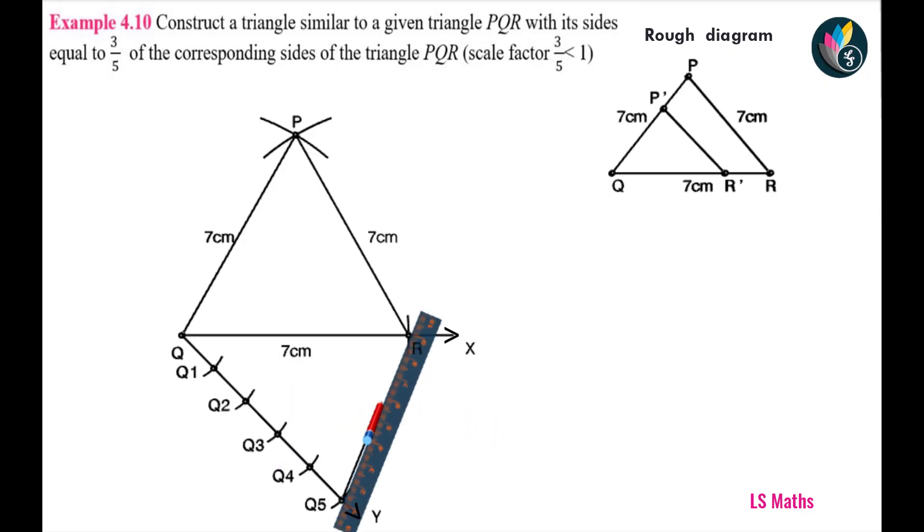Next, join Q5 and R. Next step, we are going to draw a small arc at Q5. Without changing this radius, draw another arc at Q3 because the numerator value is 3. Now, mark the point of intersection as I1.